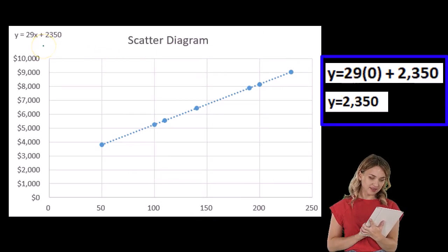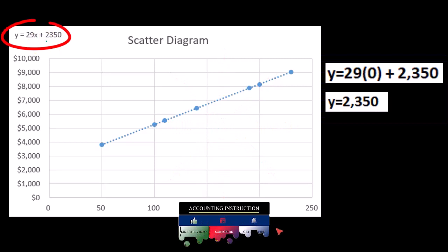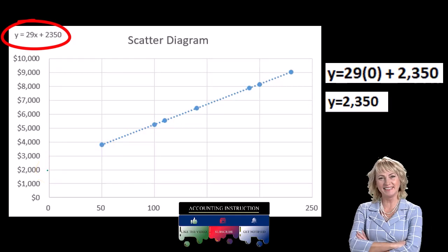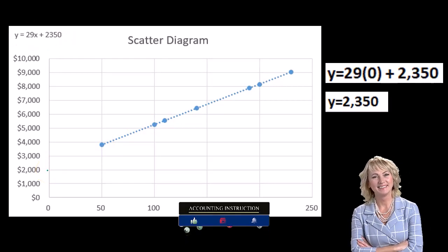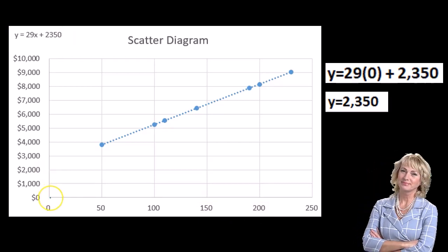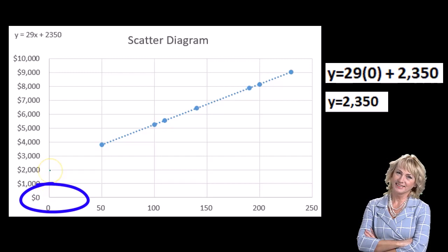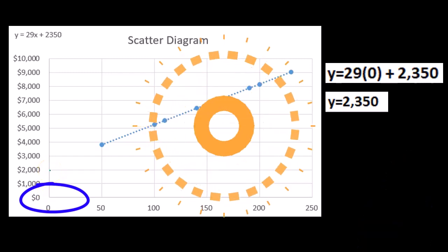So the formula for the line then would be y equals 29x plus 2,350 in this case. Once we then have the formula of the line, we can determine when this line will hit the vertical axis. And at that point in time, that's going to be the fixed cost because that will be at the point where we have 0 units being produced, but still have some cost. That cost must be the fixed portion of this type of expense.